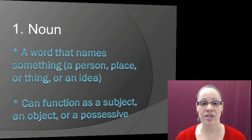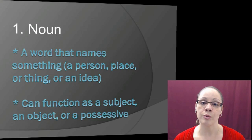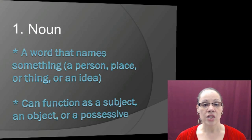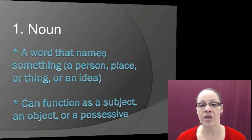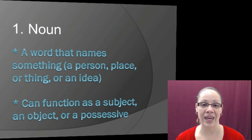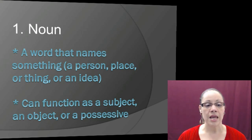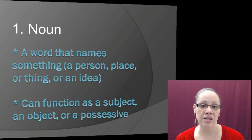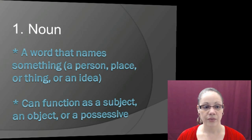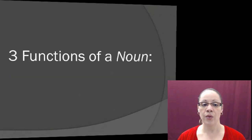We're going to start with part of speech number one: the noun. Before identifying nouns in sentences or word groups, we need to know what a noun is. A noun is a word that names something — whether that something is a person, a place, a thing, or an idea — something we can't see or physically touch. A noun can function as a subject, an object, or a possessive in a sentence.